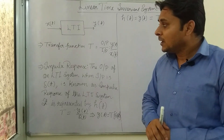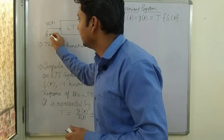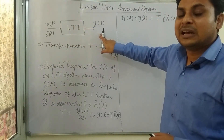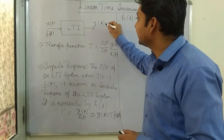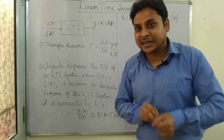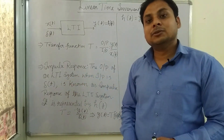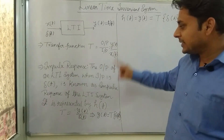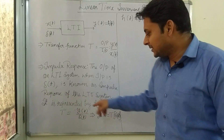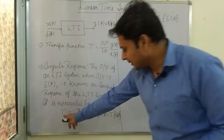Now let's understand what is impulse response. If we give at input a unit impulse function δ(t), then its output will be known as h(t), which is the impulse response of the system. The output of an LTI system when the input is δ(t) — the unit impulse function — is known as the impulse response of the LTI system. It is represented by h(t).